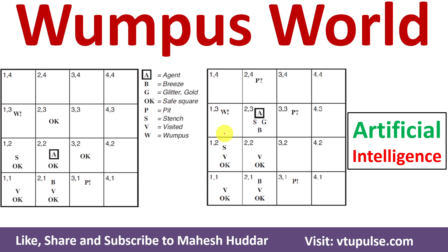In this video, I will discuss how an agent can find a path from the initial square, that is (1,1), to the square where the gold is present, and how it will come back out of this cave with the gold.